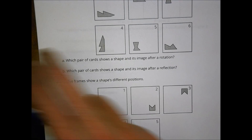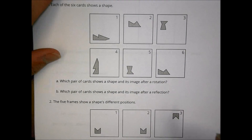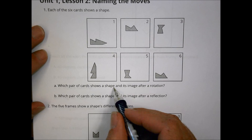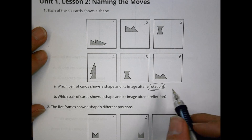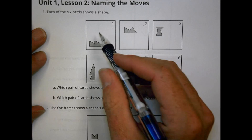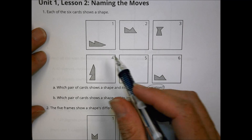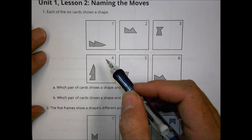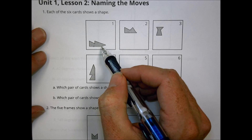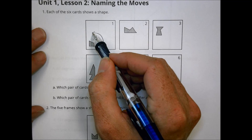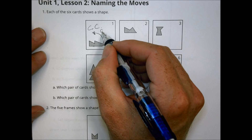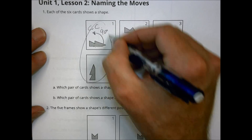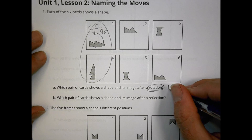Let's look at the homework problems for Unit 1, Lesson 2. The first problem gave six cards and asked which pair shows a shape and its image after a rotation. A rotation involves a turn of some sort. You look for shapes that match, and we can see from card one to card four we're rotating counterclockwise 90 degrees — so the answer is one and four.